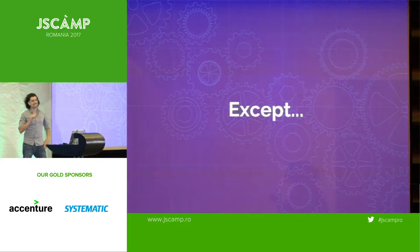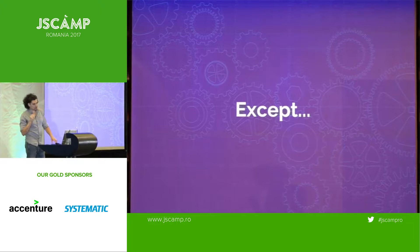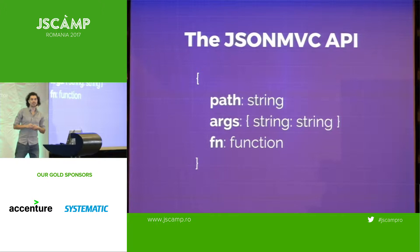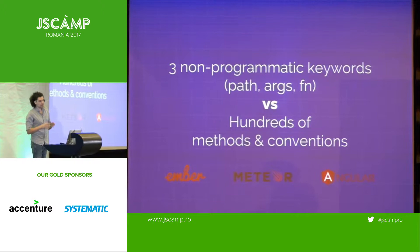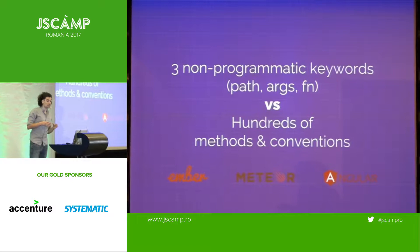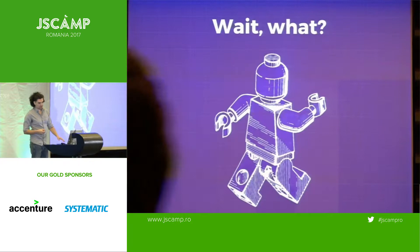But there's a very, very tiny, almost insignificant difference between all those frameworks and JSON-MVC. It's so tiny that I managed to fit the entire difference in one slide. It's API. It has only three keywords, but these three keywords allow you to do the exact same applications as you would with the hundreds of methods and conventions and restrictions that all these frameworks put you through. These are three non-programmatic keywords, so they don't affect the way you code or the flavor of JavaScript you use.